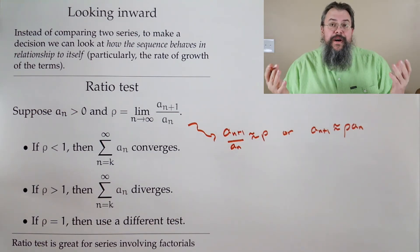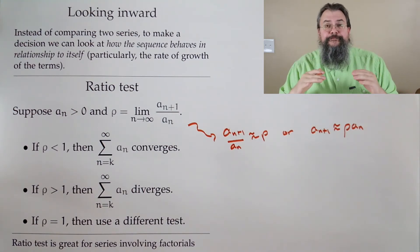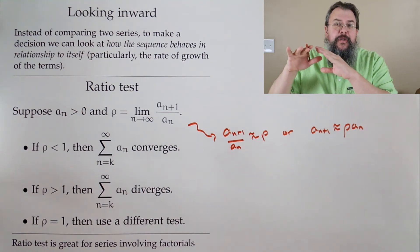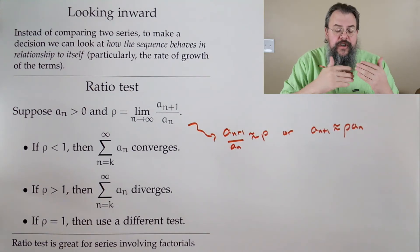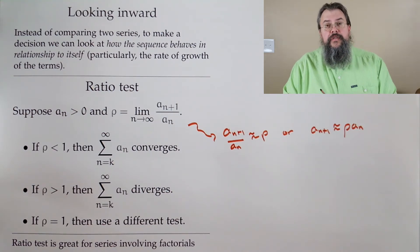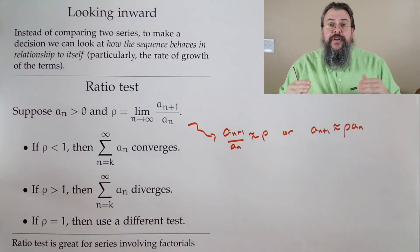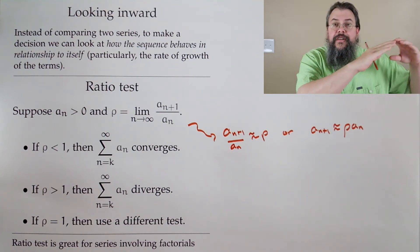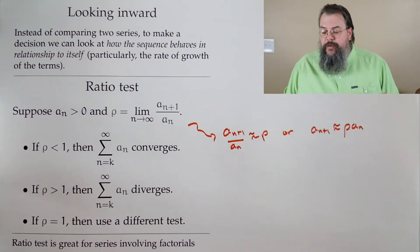What about rho equals 1? That says a_{n+1} is kind of close to a_n, and unfortunately we just don't have enough information. Questions about convergence or divergence almost always boil down to: how quickly do we approach 0? If our terms go to 0 very quickly, we converge. If they go very slowly, we diverge. If they don't go to 0 at all, the series really diverges.